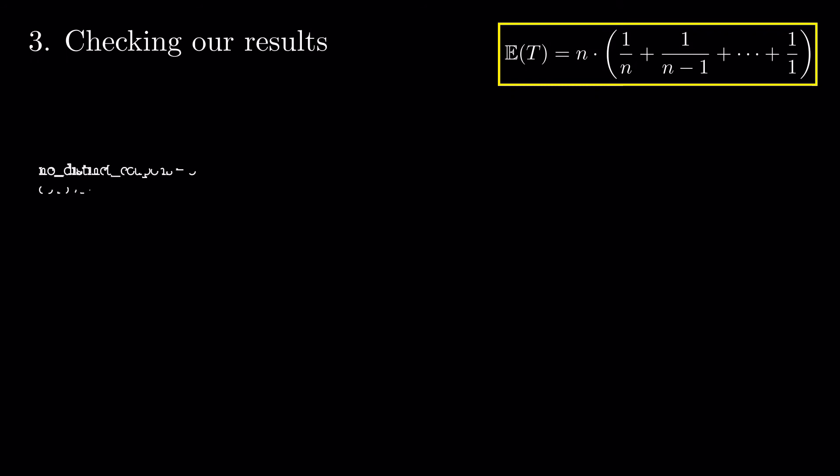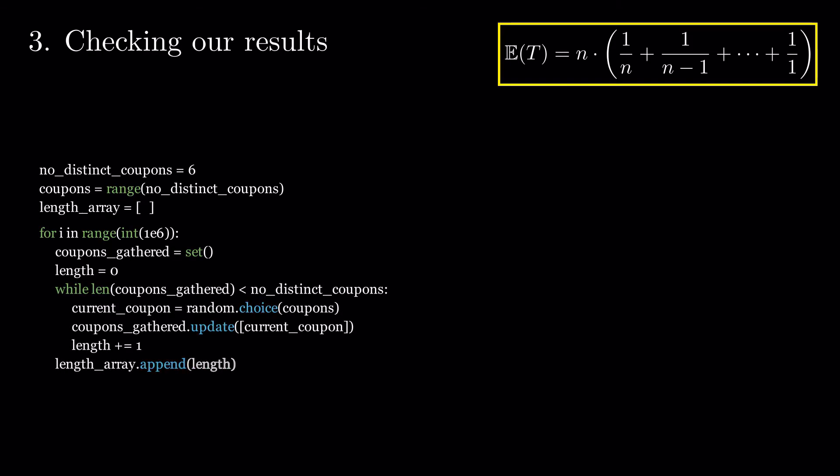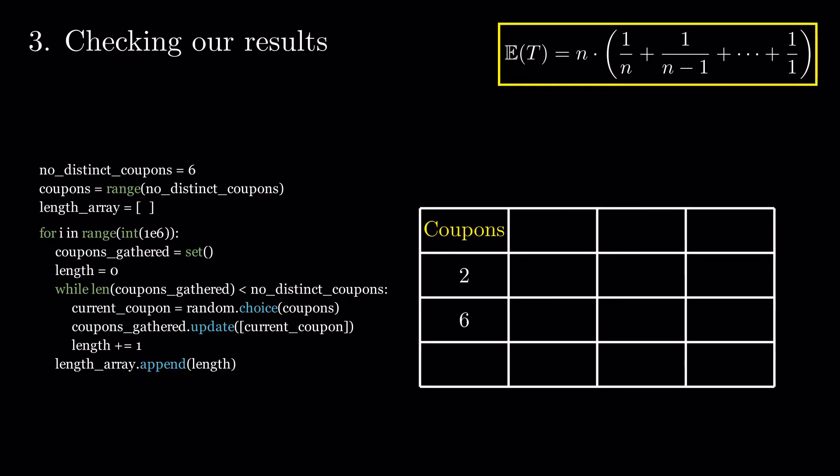Let's see if we can get the same results by simulating the rolls. For 2, 6 and 151 values, we look at 1 million simulations and compute the minimum, maximum and average length of tries needed. We can see that the expected value increases more than linearly with n, as we have seen before.